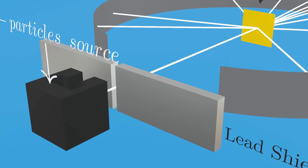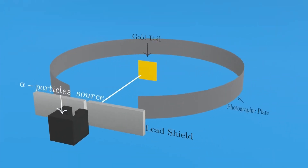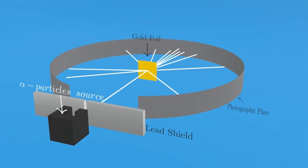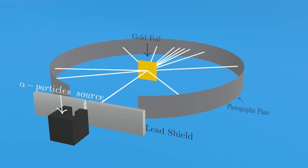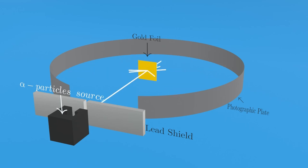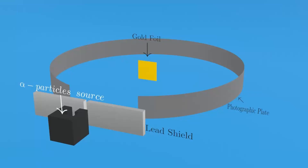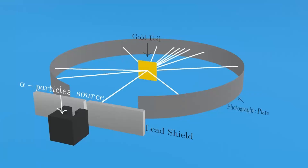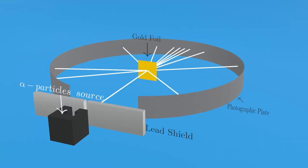Now, let's grasp the mechanics of this experiment. Alpha particles are emitted from the alpha particle source emitter, traverse the lead shield, and collide with the gold foil. Upon interacting with the gold foil, the alpha particles undergo scattering, and the resulting pattern can be observed on our photographic plate.